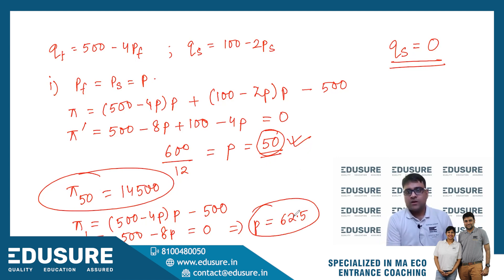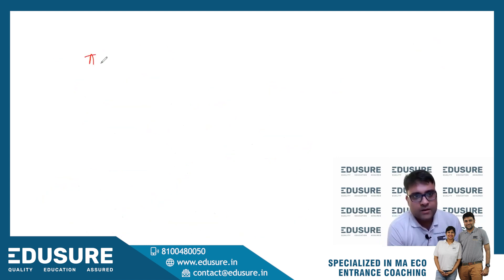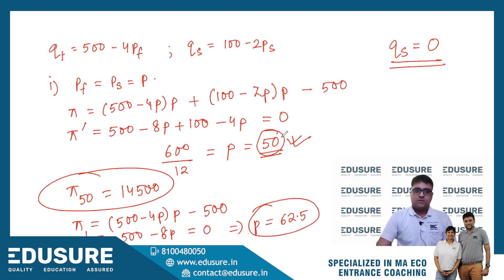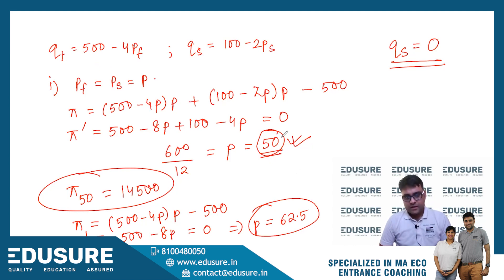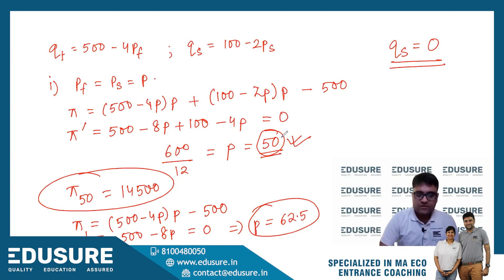What is the profit at p equals 62.5? The quantity is 250, multiplied by 62.5. The profit comes out to 15,125.